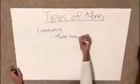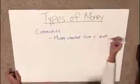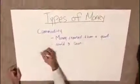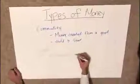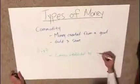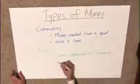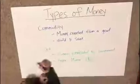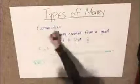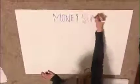A commodity money has an alternative value — the object itself has inherent value. For example, coins. Fiat money technically has no intrinsic value, like a five dollar bill, but people accept it as paper currency.